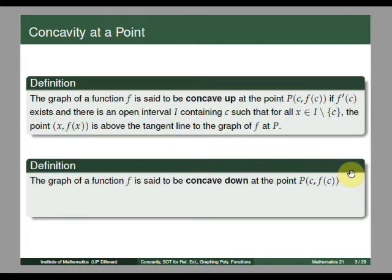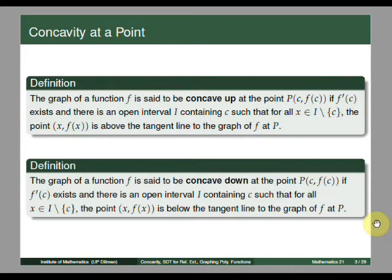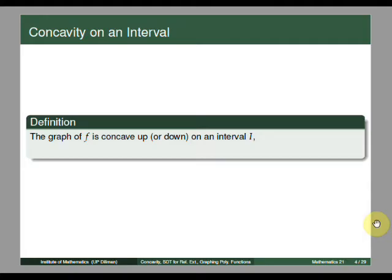In a similar manner, we say that f is concave down at the point p if f prime of c exists and there is an open interval containing c such that for all x in i except c, the point (x, f(x)) is below the tangent line to the graph of f at p. We also define concavity on an interval: the graph is concave up on interval i if f is concave up at any point on that interval, and concave down on i if it is concave down at all points in i.